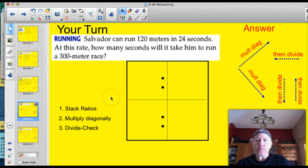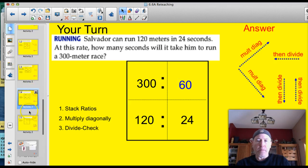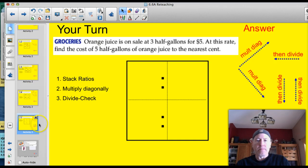Your turn. Try to solve this problem here. Go ahead. Let's see how you did. I set this one up like this. 300. And then I had 120. And 24. And my answer was 60. If you check your cross products, you should be good. Let's try the next one.